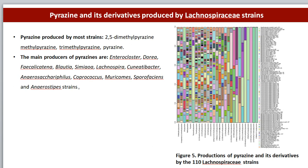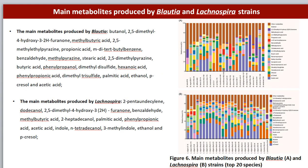Pyrazines produced by most strains were 2,5-dimethylpyrazine, methylpyrazine, trimethylpyrazine, and pyrazine. Blautia and Lachnospira are major groups of prevalent bacteria in the human intestine that produced a variety of alcohols, acids, pyrazines, and ketones, which implies they may play diverse roles in host health.